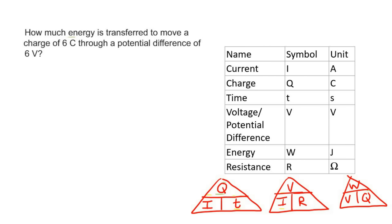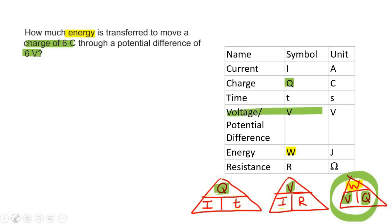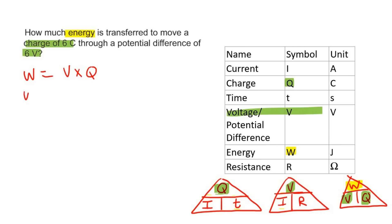How much energy is transferred to move a charge — so we have Q — through a potential difference of 6, so we have V. They want us to calculate W. So we can just use that triangle. W is at the top, so you're going to multiply the two bottom parts together. Voltage is 6 and the charge is 6, so that gives you 36 joules.